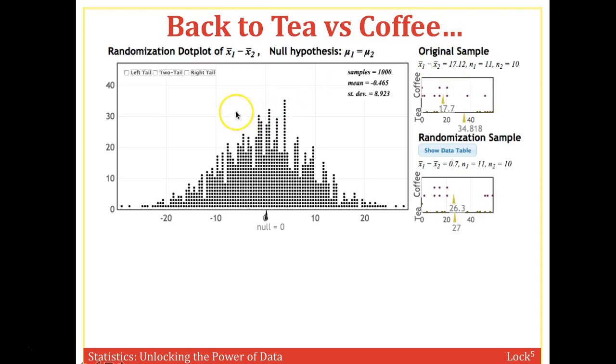This randomization distribution is generated by reshuffling all those data points a thousand different times, and then all those values are distributed.